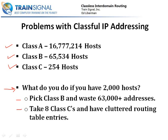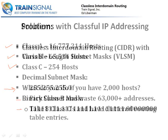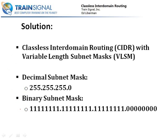Or you could get eight Class C networks, which would be just over the 2,000 you need, but now you're going to end up with cluttered routing table entries on the internet because your one network of 2,000 looks like eight different networks. The solution would be to go to Classless Interdomain Routing, or CIDR, with Variable Length Subnet Mask, VLSM.